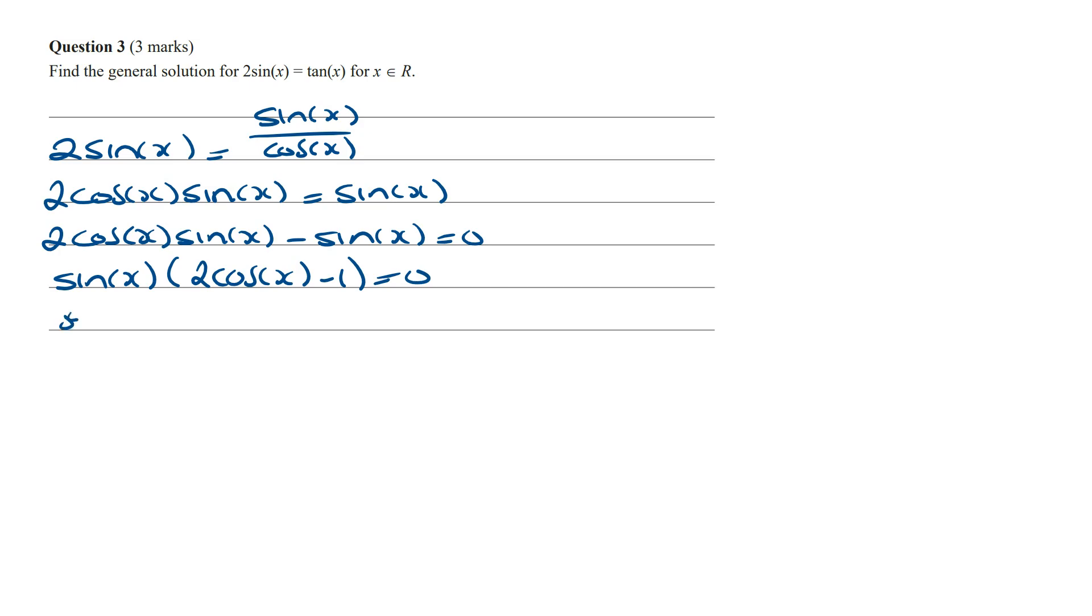And so therefore this means that sine of x has to equal 0 or 2 times cos of x minus 1 has to equal 0.